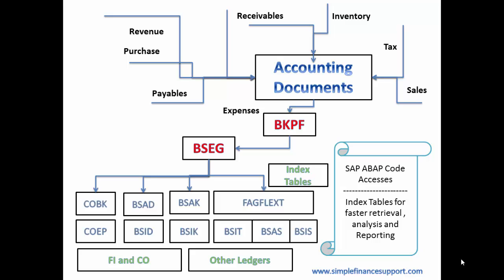When we are accessing this accounting information for reporting, SAP accesses index tables for faster retrieval of data, which provides analysis and reporting. For example, if I want vendor line items, I don't go to the BSEG table — I go to BSAK or BSIK table for vendor-related open items or cleared items. SAP has coded retrieval to be faster based on these index tables. This is the architecture available before Simple Finance or S4 HANA, the new generation business suite, was introduced.